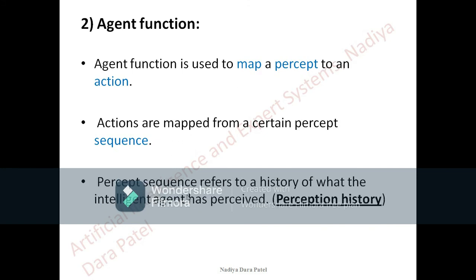Percept sequence refers to a history of what the intelligent agent has perceived. Sequences are perception history. I have already given a brief about what perception history is in the previous lecture — please go through the previous lecture and refer to it.